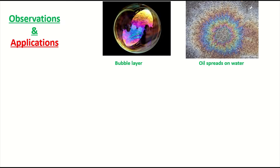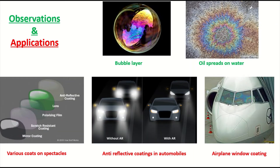We generally observe thin films in our day-to-day life — especially in the case of a soap bubble, which acts like a thin film. In the rainy season, when oil spreads on water, you will find beautiful colors, which is because of interference. The soap layer also acts like a thin film. Applications include various coatings on spectacles such as mirror coating, scratch-resistant coating, polarizing film, and lens anti-reflective coating.